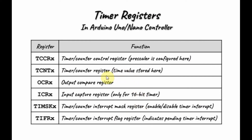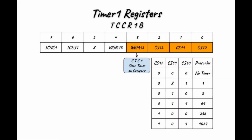Each timer has two channels, A and B. For example, the timer counter control register would have TCCR1A and TCCR1B. In this video, the focus will be on Timer 1 registers.